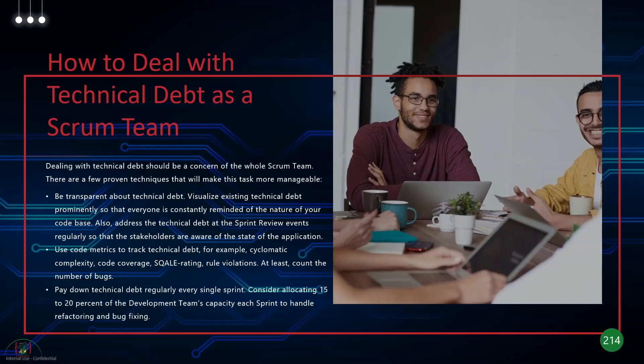As a rule of thumb, you can allocate 15 to 20% of the development team's capacity each sprint just for handling refactoring or bug fixing. If they are 100% involved in a project, take 20% of that time to work on technical debt from the product backlog, and the rest 80% can work on new stories.